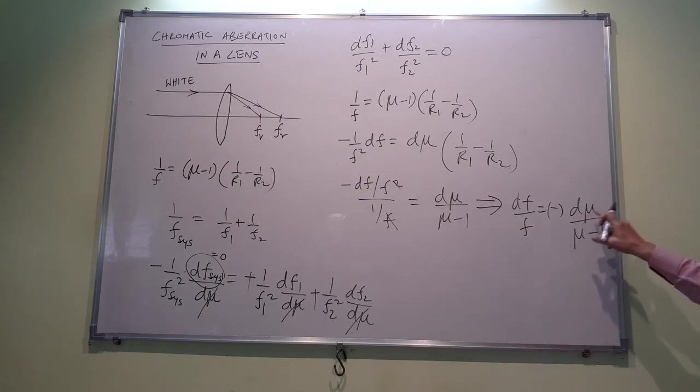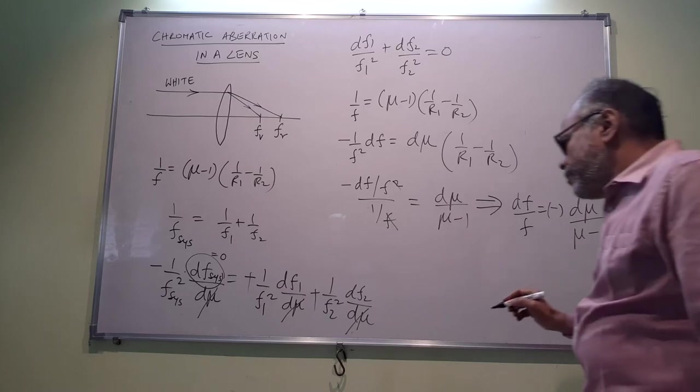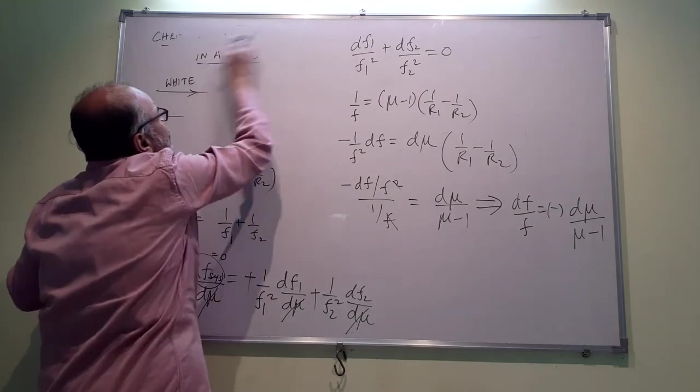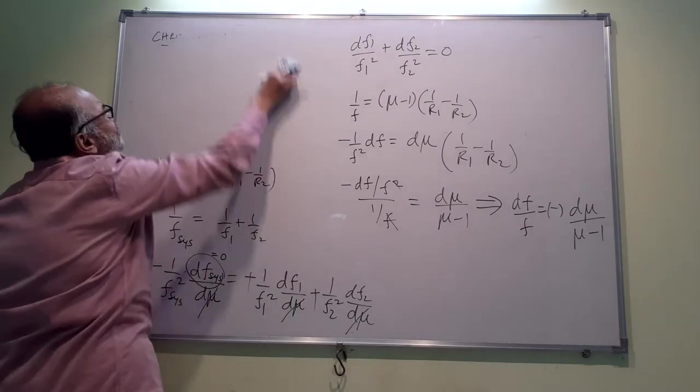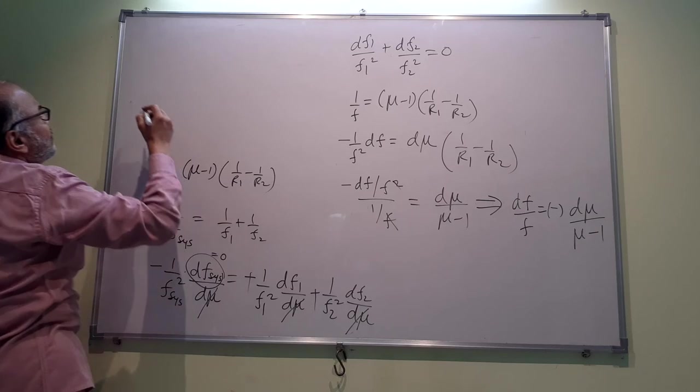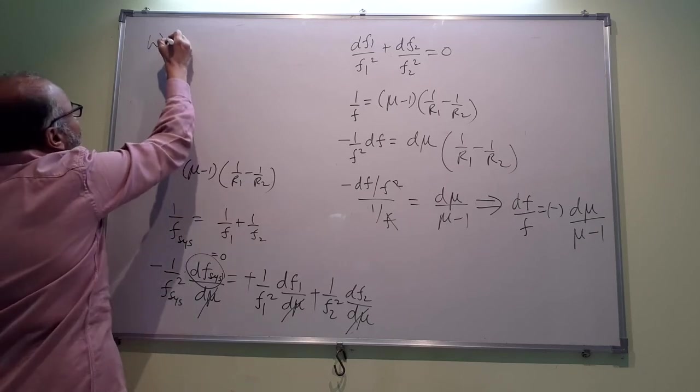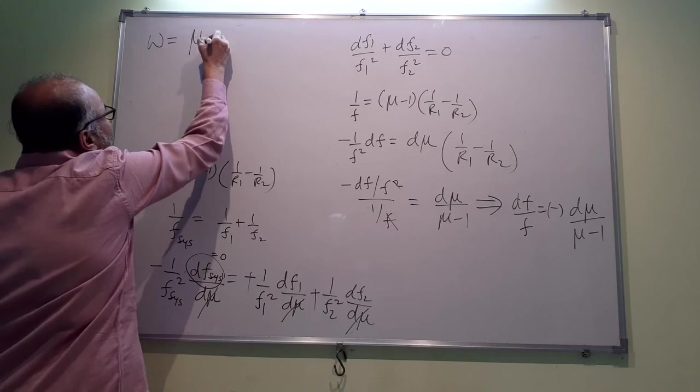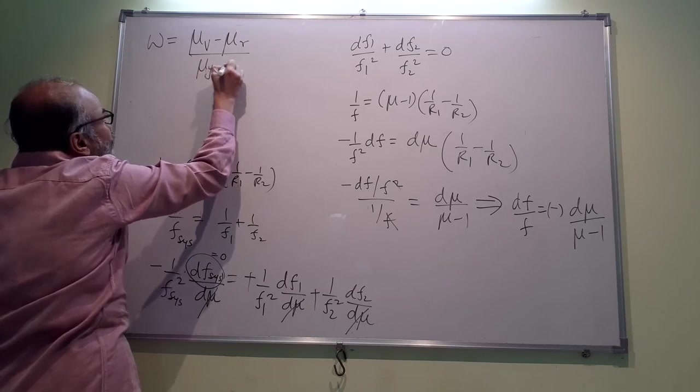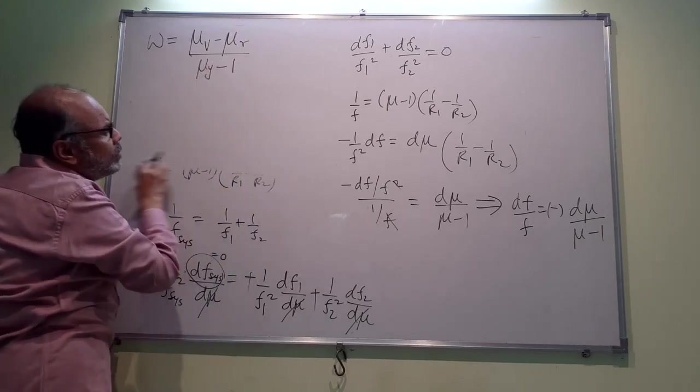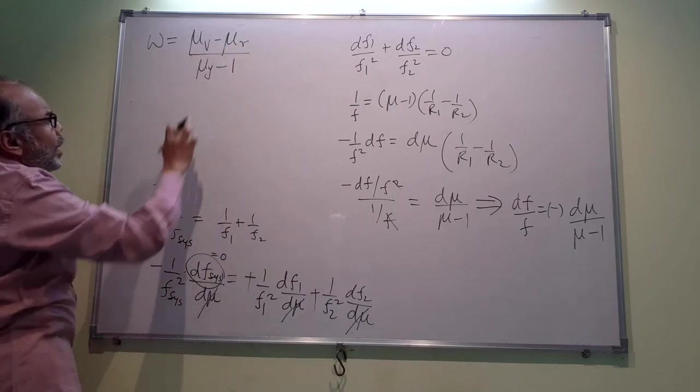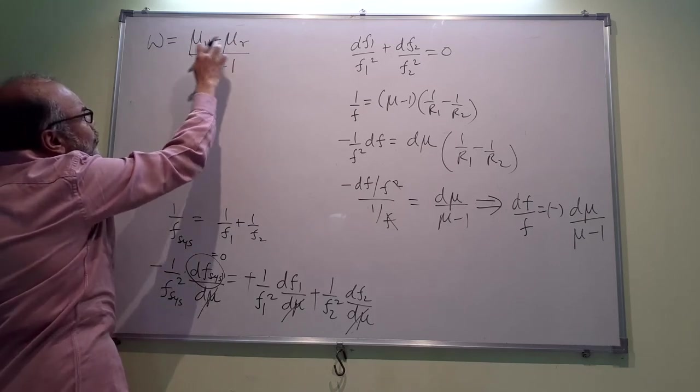Let us see what this quantity dμ/(μ-1) is. We have learnt that the dispersal power of a prism, of the material of a prism—it need not be a prism, it can be a lens, any material, any shape—but the dispersal power, we learnt it as ω = (μ_violet - μ_red)/(μ_yellow - 1). Now the μ of violet and μ of red are the extremes, and μ of yellow is the mean of these two refractive indices.